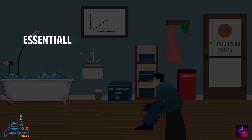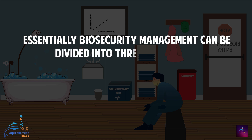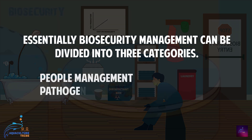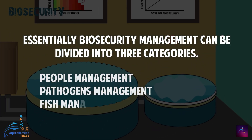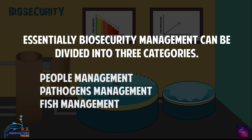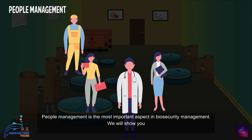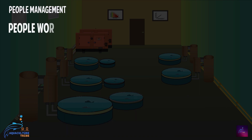Essentially, biosecurity management can be divided into three categories: people management, pathogen management, and fish management. People management is the most important aspect in biosecurity management.